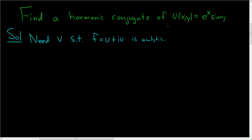Before we do that, let's compute the partials of u. Del u del x: we're treating y as constant, so this is simply e to the x sine y. Del u del y: now we're treating x as constant, so the derivative of sine is cosine. This is e to the x cosine y.